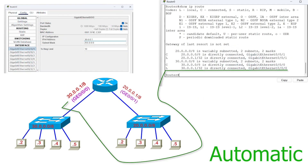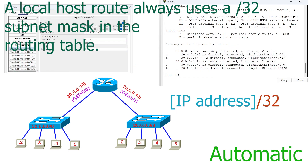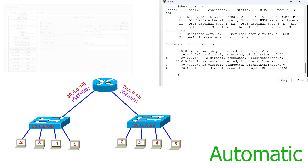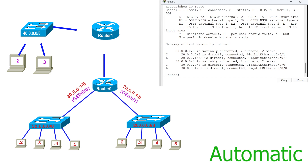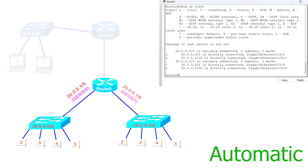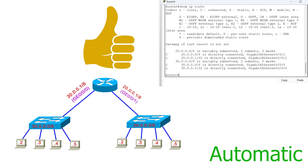For this, the router adds the interface's IP addresses to the routing table. It uses a subnet mask of /32 to represent a local host route in the routing table. Since it uses IP configurations of local interfaces, it cannot add routes that are available on other routers. You can use this method on a network that has only one router.